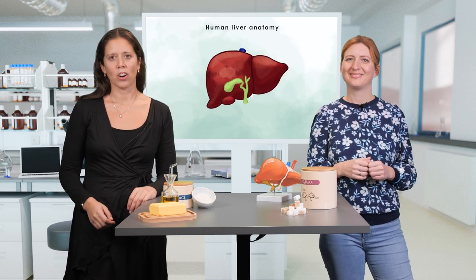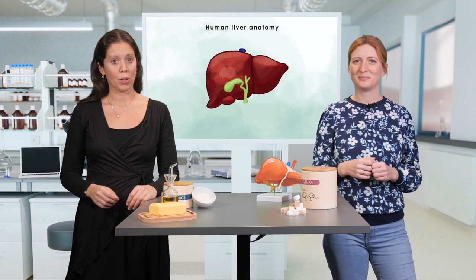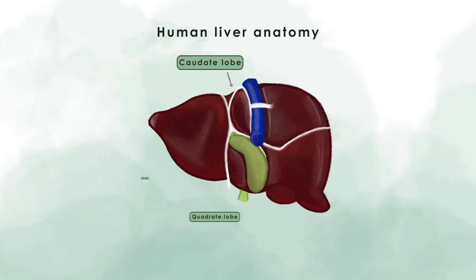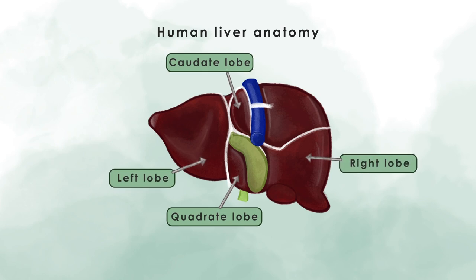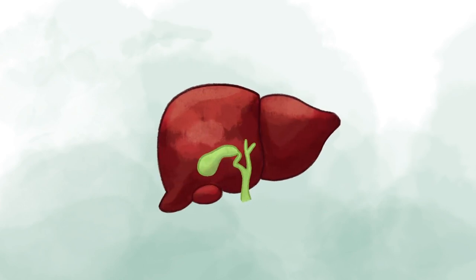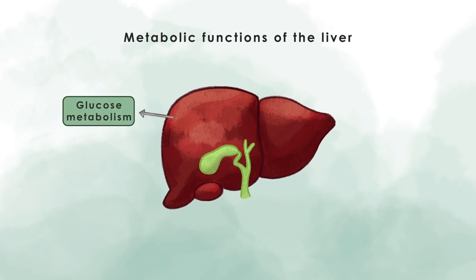The liver is the largest solid organ of our body. The human organ consists of four big parts called lobes. The liver performs hundreds of vital functions and plays a central role for many metabolic processes for our body, including glucose and lipid metabolism.